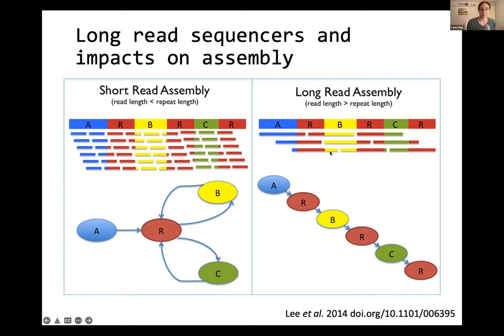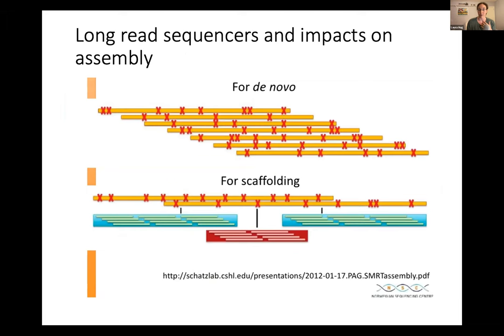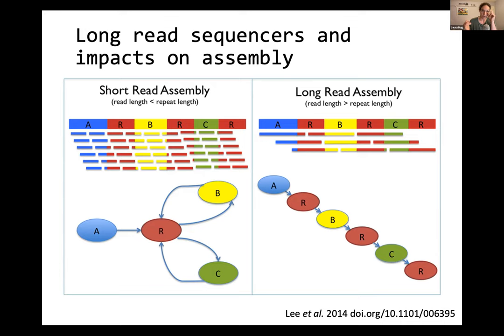A read that goes through the repeat from A to B answers that question definitively. Similarly, another read goes from B through the repeat to C, so you can create a very clean linear genome map if you have some long reads to map on top. There have been a few studies in the last year or two doing just long read sequencing and assembly for microbial communities, but they've only really been successful for really small simple consortia. For complex communities it's going to be very difficult to generate enough sequencing depth. So mostly right now, long reads are still used to strengthen scaffolding and clarify assembly.